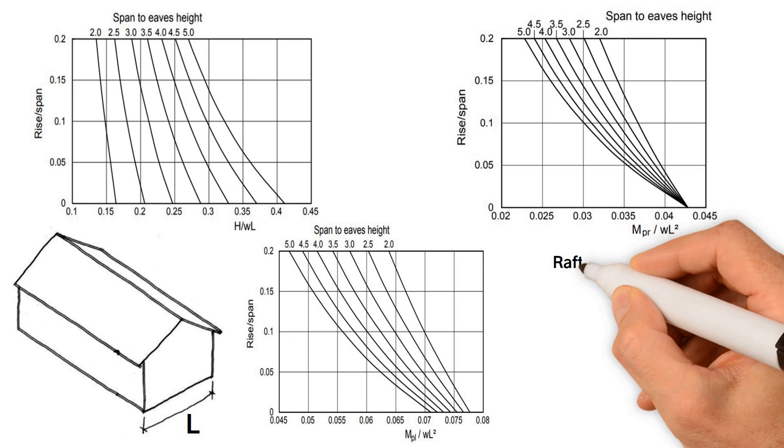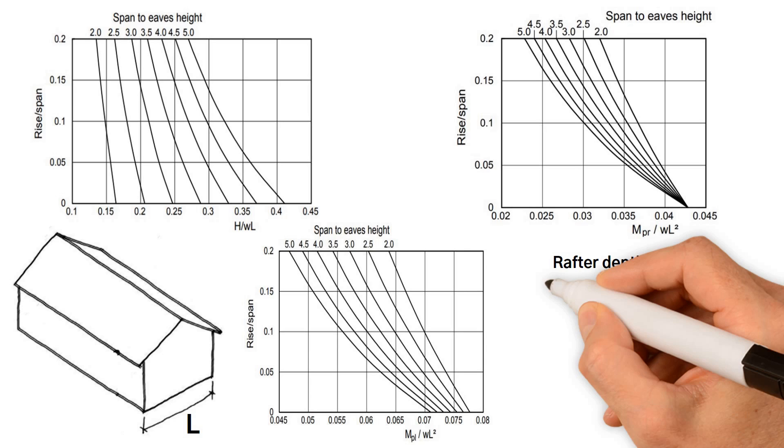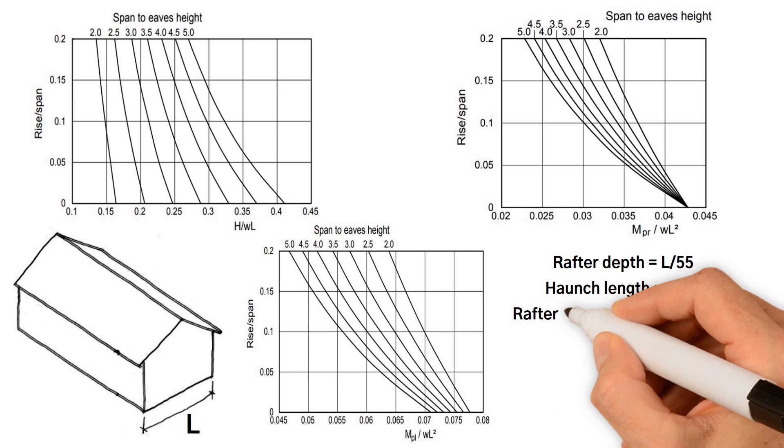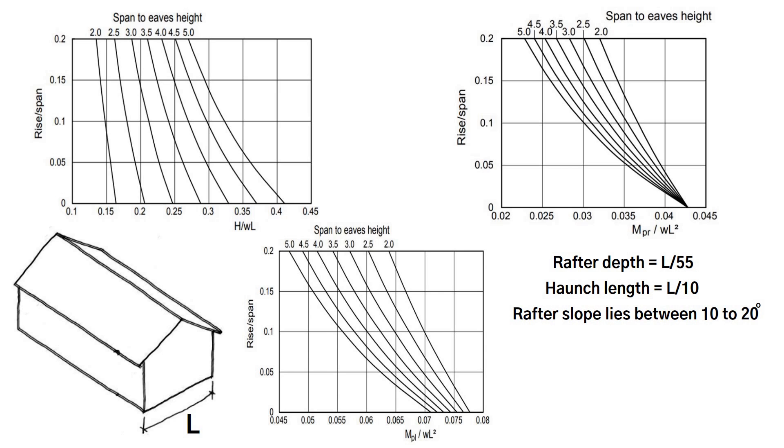The rafter depth is approximately span over 55. The haunch length is approximately span over 10. The rafter slope lies between 10 to 20 degrees. The ratio of span to eave height is between two to five. Each chart requires a knowledge of the geometry of the frame and the design loading as input data in order to determine approximate sizes for the rafter and column member.